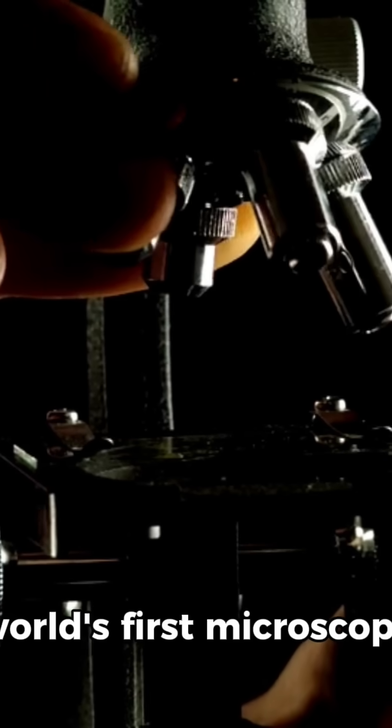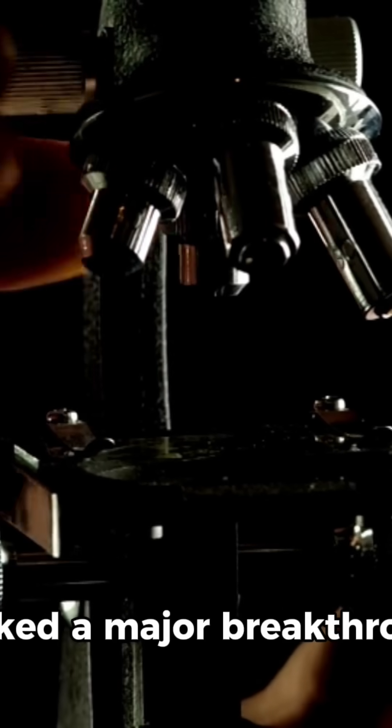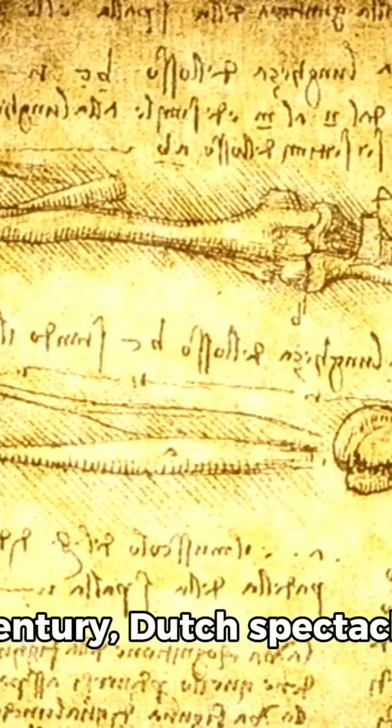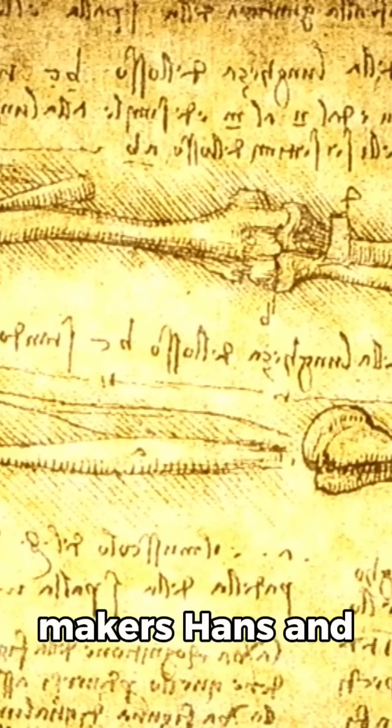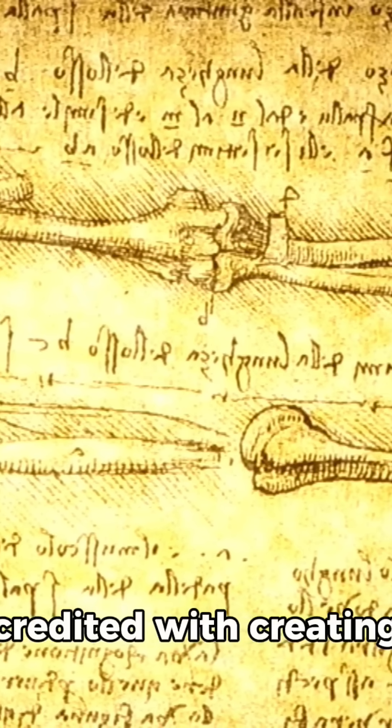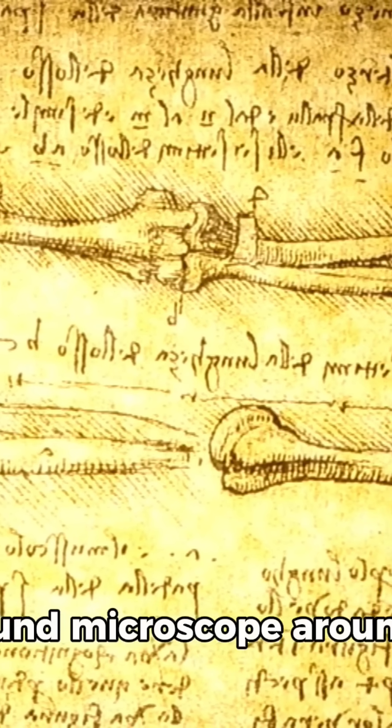The invention of the world's first microscope marked a major breakthrough in science and medicine. In the late 16th century, Dutch spectacle makers Hans and Zacharias Janssen are credited with creating the earliest known compound microscope around 1590.